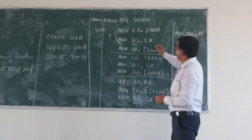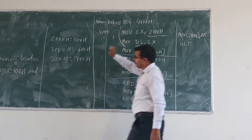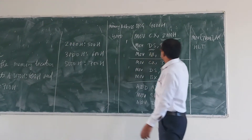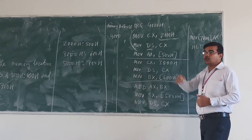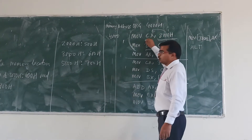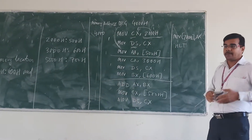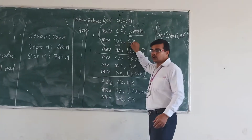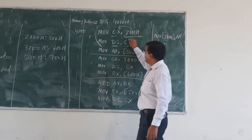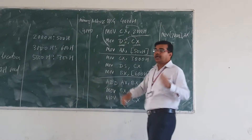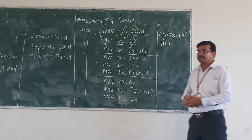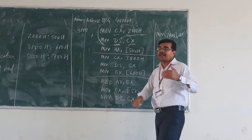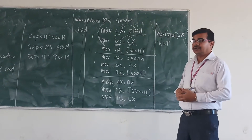The first segment address is 2000h. So 2000h is copied into the CX register, which is a general purpose register. Then that value 2000h is assigned to the segment register DS. So here we are initializing the segment register DS.